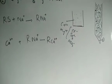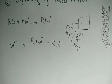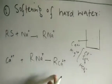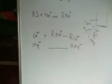So R–SO3Na becomes R–SO3Ca and R–SO3Mg, because calcium and magnesium are both present in the hard water. Since they are alkaline earth metals of similar size, they interact similarly with the active sites. So after pouring the water sample over the column, the sites are now occupied by R–Ca and R–Mg.